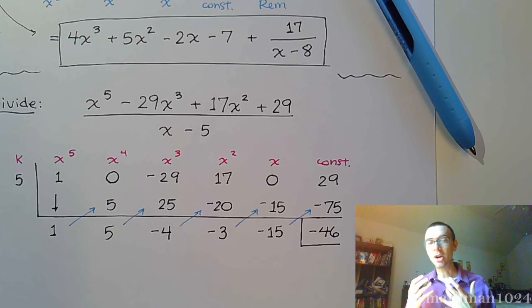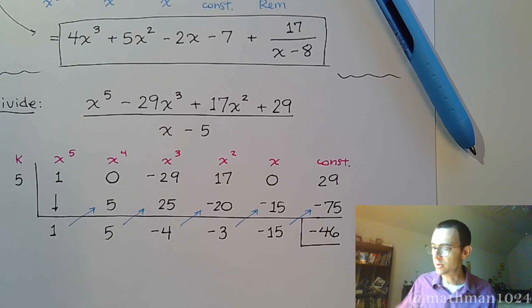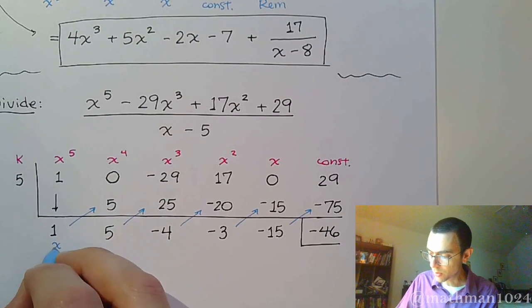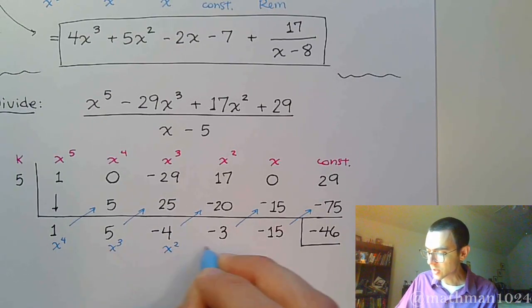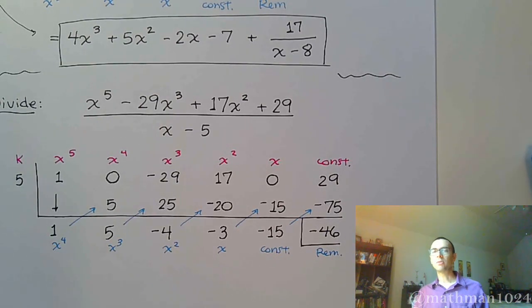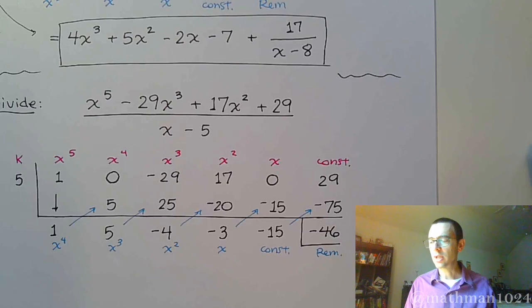So now we've got to write our answer as that quotient function plus the remainder over the divisor. x to the 5th column becomes x to the 4th. This is x to the 3rd, x squared, x. There's your constant term, and here is your remainder. Now you don't have to put these labels in the columns like I'm doing here. I do that so that I can clearly see what my answer is going to look like.